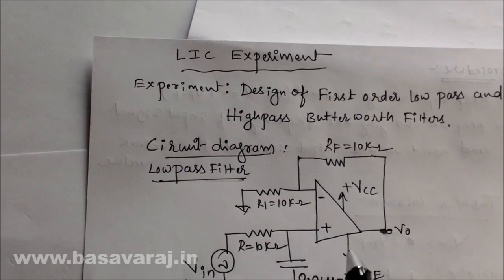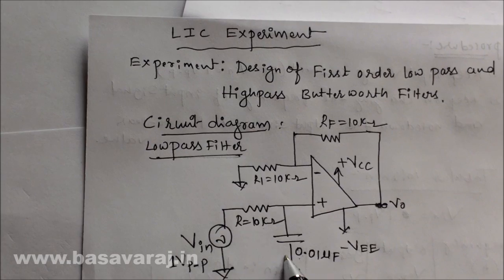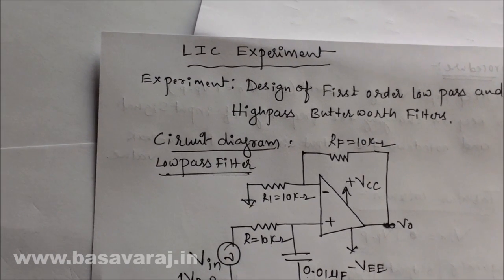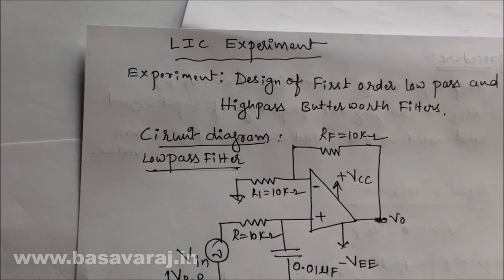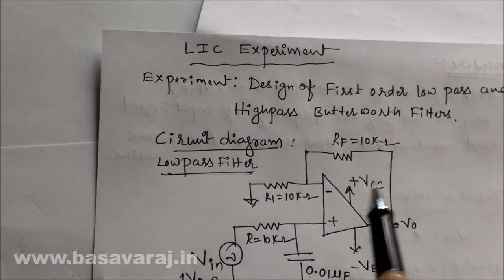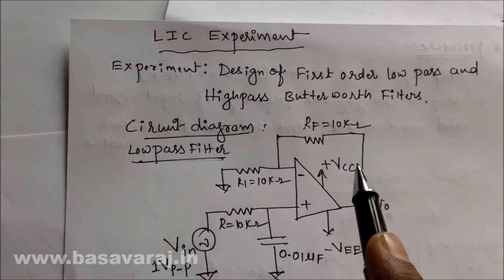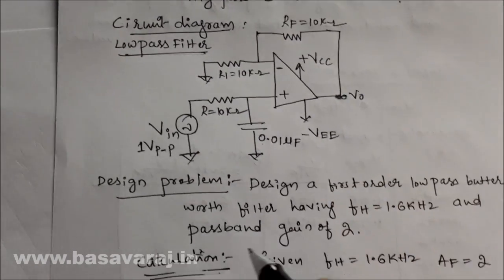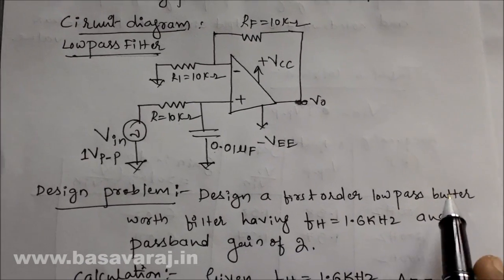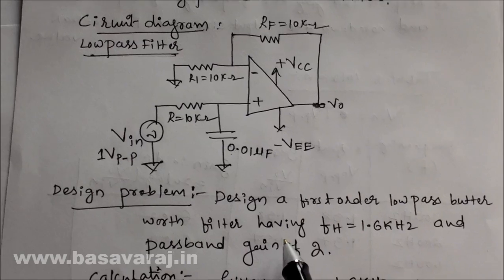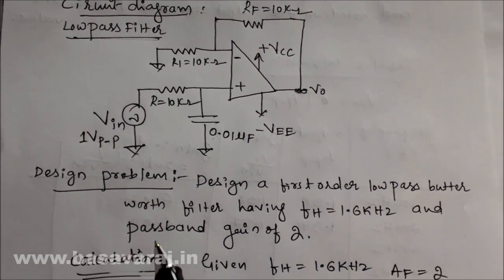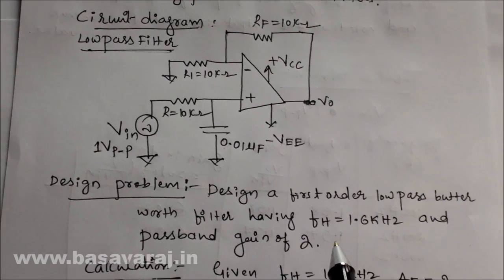Feedback resistors are connected, and one capacitor is connected. Designing a first order low pass filter means we have to find out the values of the capacitor C, the resistor R, R1, and RF based on the given problem. The problem is: design a first order low pass Butterworth filter.